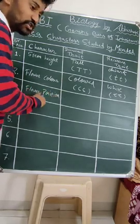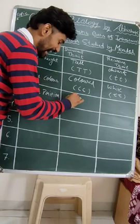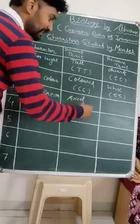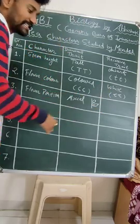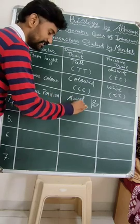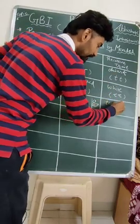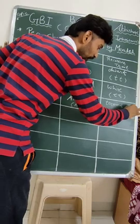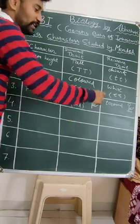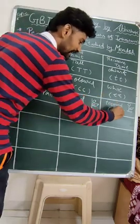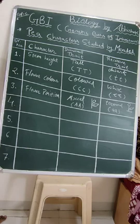Flower position is our third character in this pair. The flower present at the axial — that terminology indicates in the axil of the leaf. When a flower appears in the axil of a leaf, it is known as axial, denoted as capital A capital A. The second recessive trait is terminal — terminal means the flower is at the tip, denoted as small a small a.